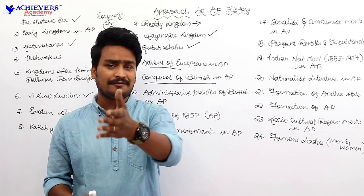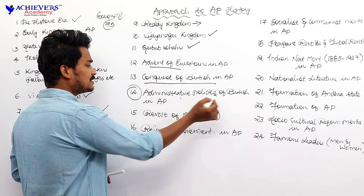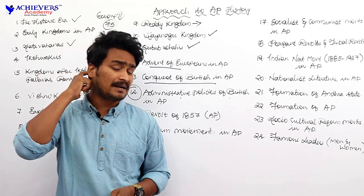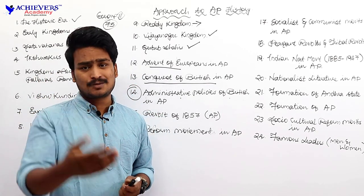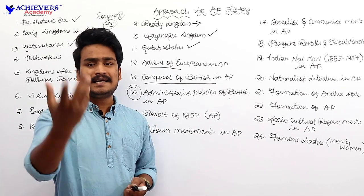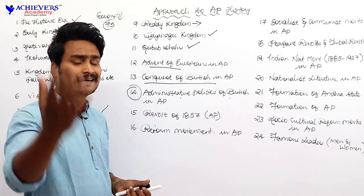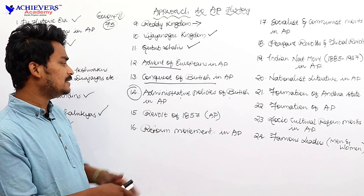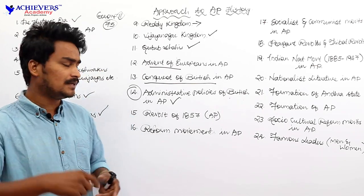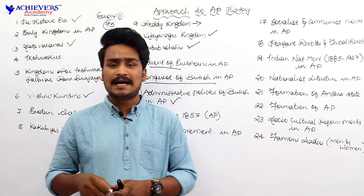After this chapter, we shall discuss the administrative policies of British in Andhra Pradesh. British introduced many administrative policies — the Ryotwari system. We will learn about Arthur Cotton, what measures were introduced by Sir Thomas Roe, and what were the revenue systems of British. This will be discussed in the chapter on administrative policies of British in Andhra Pradesh.